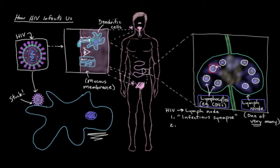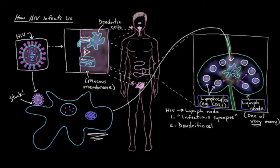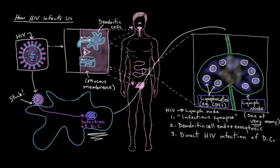Another way is where the dendritic cell endocytoses a group of HIV particles, brings that endocytosed group to the lymph node, and then exocytoses them right inside the lymph node — where all the other immune cells get exposed to them and can thus get infected as well. The third way is that HIV will directly infect our dendritic cell at some point during initial contact either at the mucous membrane or during the period of time when the dendritic cell is traveling to the lymph node.